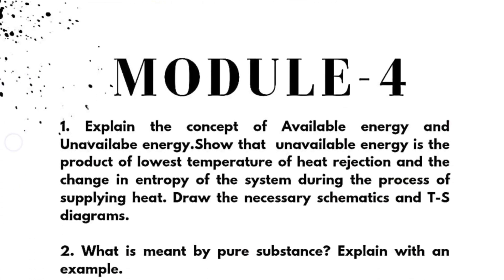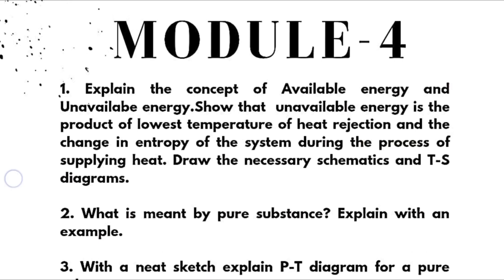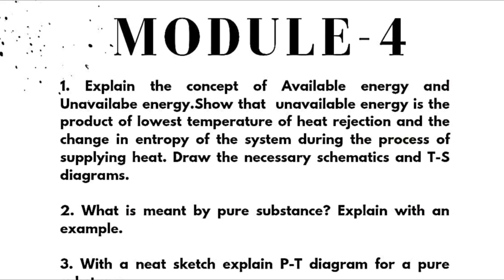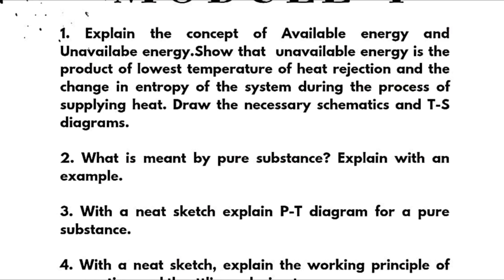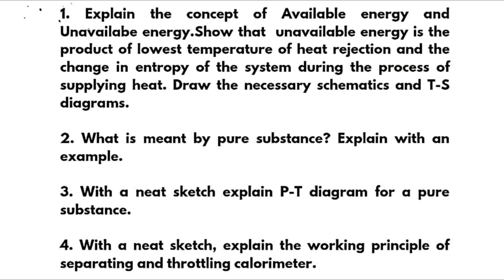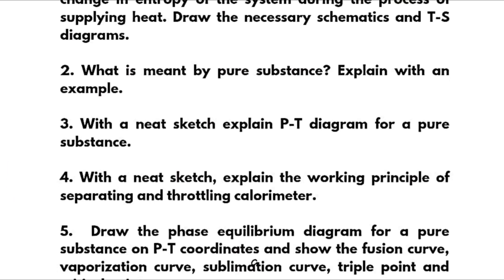Now coming to Module 4, we have here: explain the concept of available energy and unavailable energy. Show that unavailable energy is the product of lowest temperature of heat rejection and the change in entropy of the system during the process of supplying heat. Draw the necessary schematics and T-S diagrams. What is meant by pure substance? Explain with the example. With a neat sketch, explain PT diagram for a pure substance. With a neat sketch, explain the working principle of separating and throttling calorimeter, which is the super important one, ten marks question.